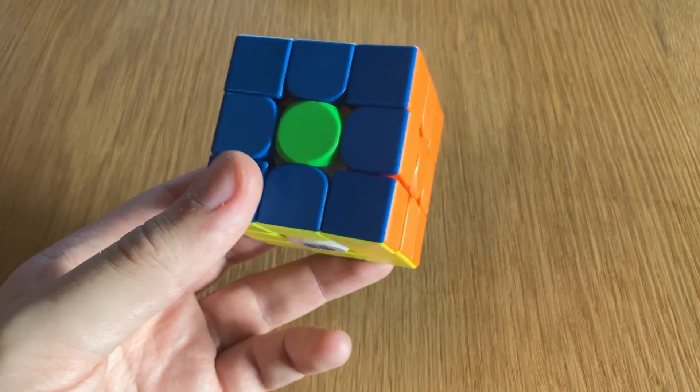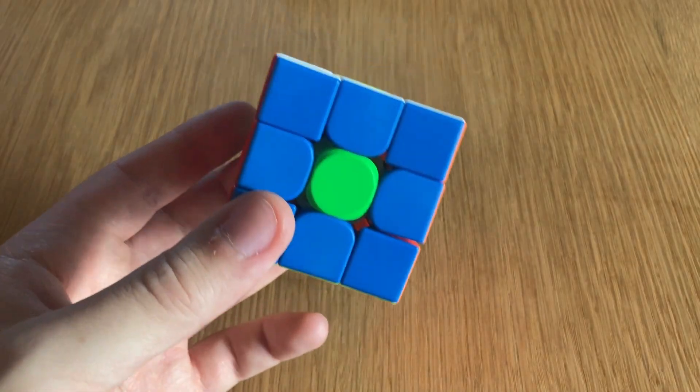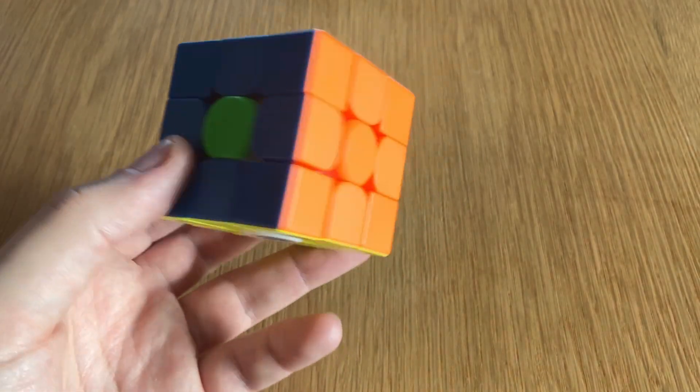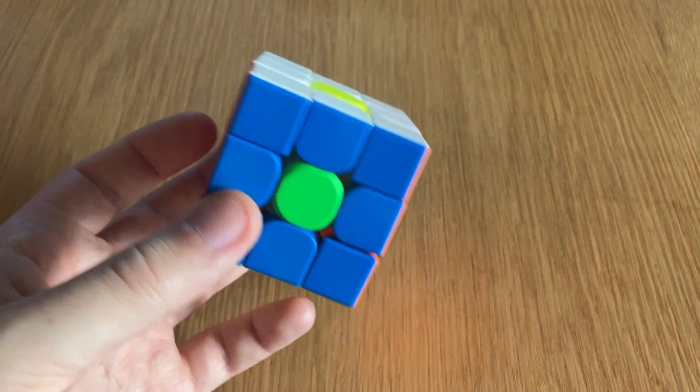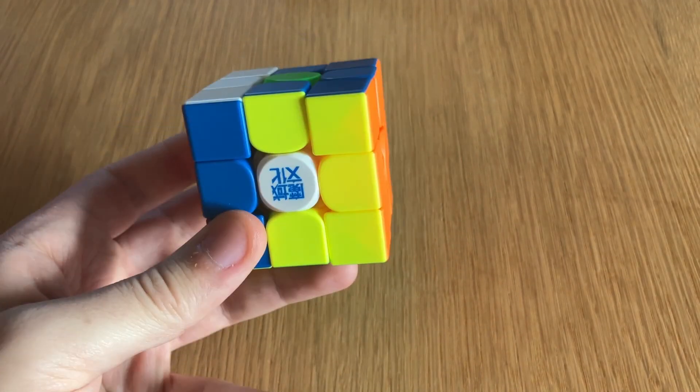If I want to do something like a wide turn, then all I need to do is push on both the middle and the right layer here to move both of them at the same time.